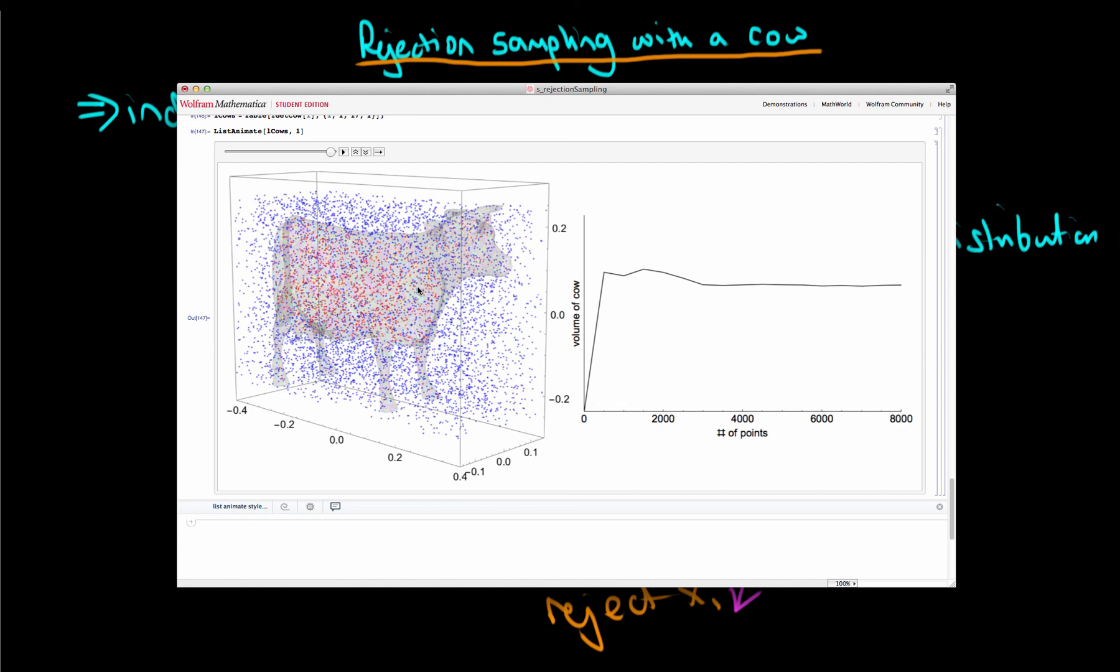So rejection sampling is a very wasteful form of generating independent samples, and unfortunately the degree of this inefficiency actually grows exponentially with the number of dimensions of our target distribution.